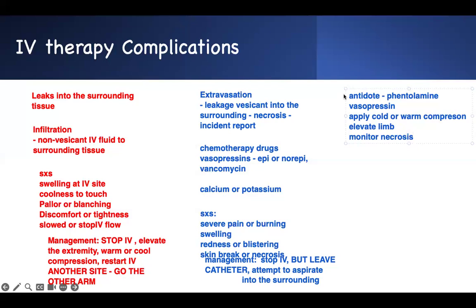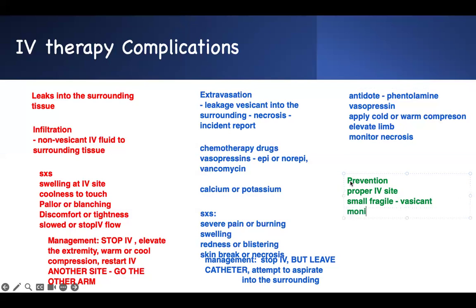How do you prevent these conditions? Prevention: choose the proper IV site. Avoid small, fragile veins if you're giving a vesicant — avoid it as much as possible. Monitor the IV site frequently to look for early signs. And the best approach is to use a central line for vesicants. If you have to administer a vesicant, try to use a central line.